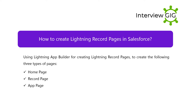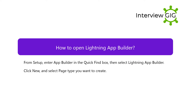How to create Lightning Record Pages in Salesforce: use the Lightning App Builder to create Lightning Record Pages for three types of pages. How to open Lightning App Builder: from Setup, enter App Builder in the Quick Find box, then select Lightning App Builder. Click New and select the page type you want to create.